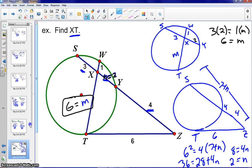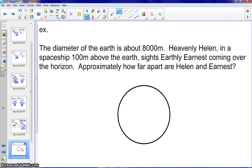The next example we have is actually from the book, okay, from the homework in the book. Let's go ahead and read it. The diameter of the Earth is about 8,000 meters. Heavenly Helen in a spaceship 100 meters above the Earth cites Earthly Ernest coming over the horizon. Approximately how far apart are Helen and Ernest?